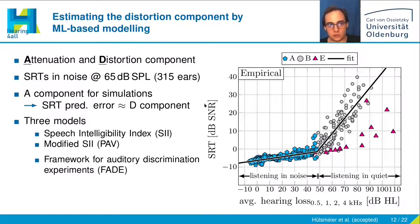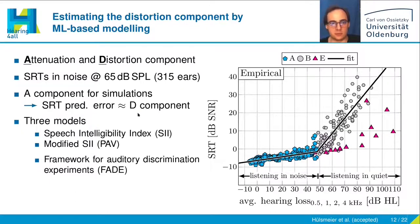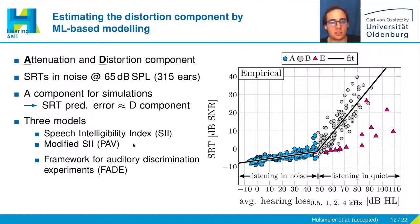Our model assumption was that if we just use the absolute hearing threshold for the simulations, then the prediction error of the SRTs reflects, to some extent, the D component. To examine this, we looked at three different models: namely the Speech Intelligibility Index (SII), a modified version termed Puff — inspired by the work of Pavlovich et al. from 1986 — and the framework for auditory discrimination experiments, FADE.